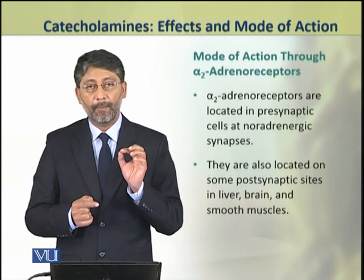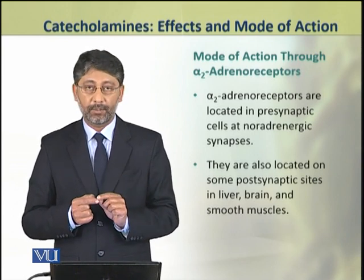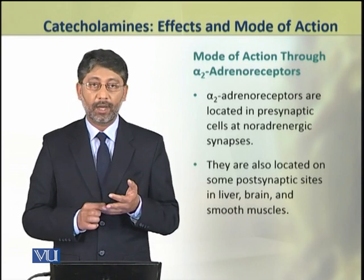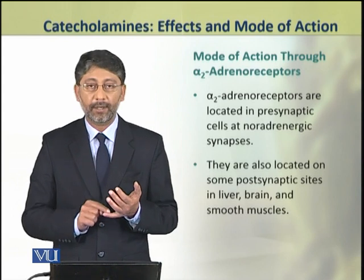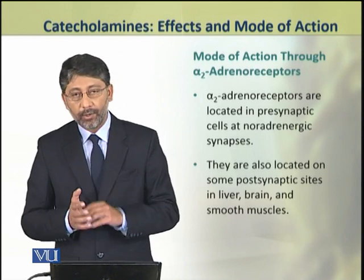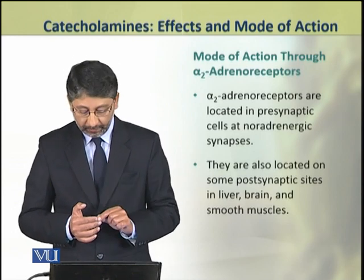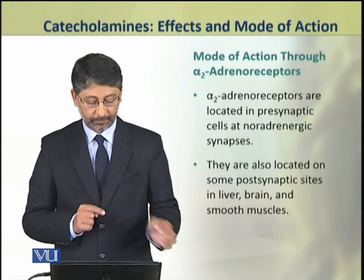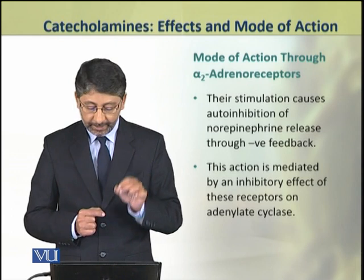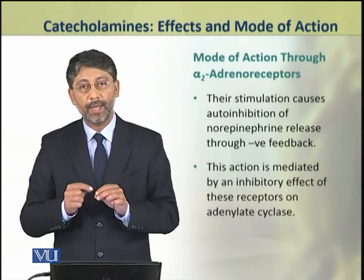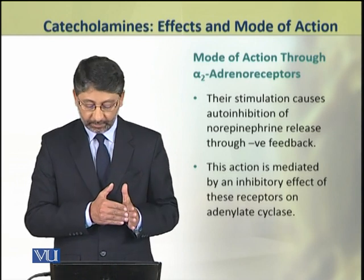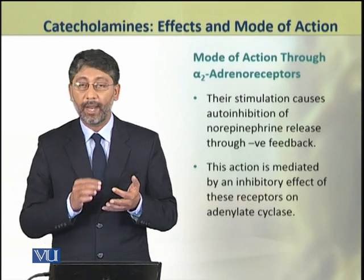Now we shall discuss the mechanism of action of catecholamines by binding through alpha-2 adrenoreceptors. These types of receptors are found in the pre-synaptic cells at noradrenergic synapses. They are also located on some post-synaptic sites in liver, brain and smooth muscles. Their stimulation causes auto-inhibition of release of norepinephrine through a negative feedback. This action is mediated by an inhibitory effect of these receptors on the enzyme adenylate cyclase.